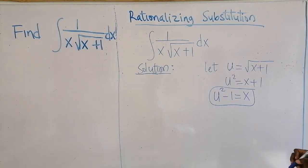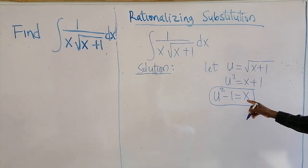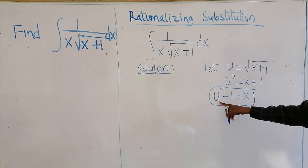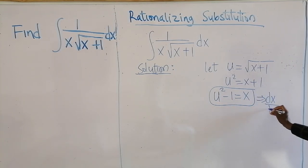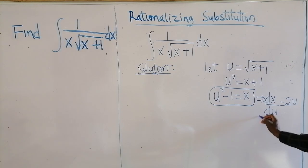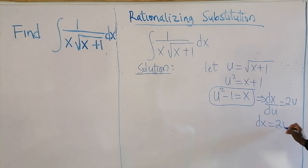The next thing you can do is differentiate x with respect to u, and that will give dx/du equal to 2u. So dx is equal to 2u du.